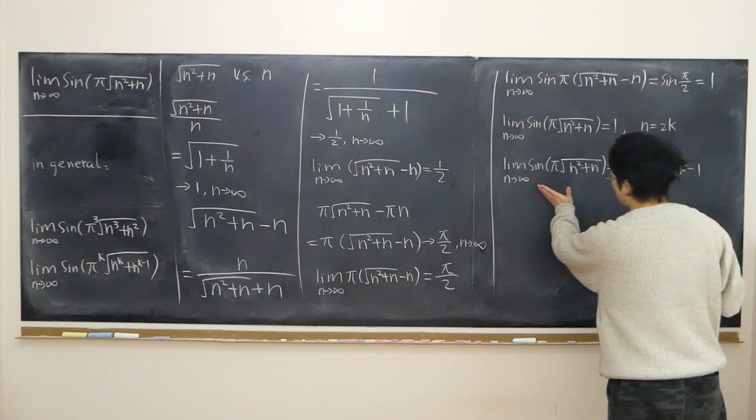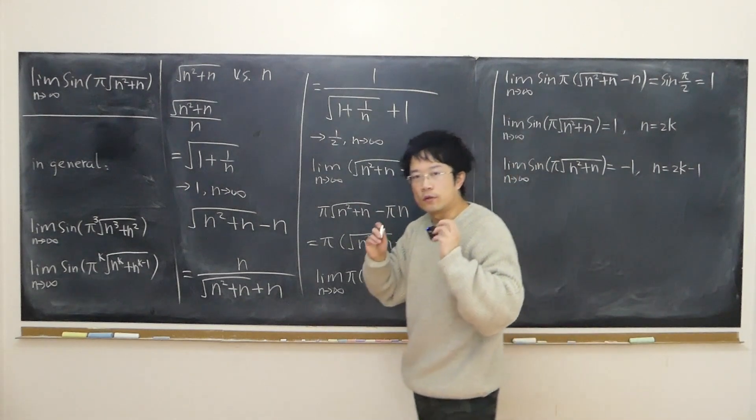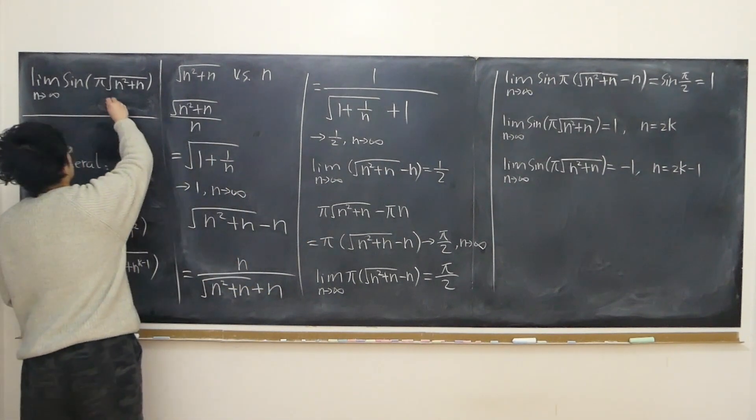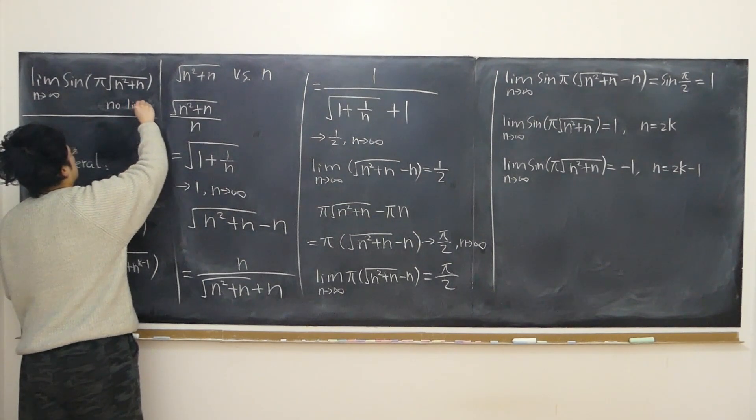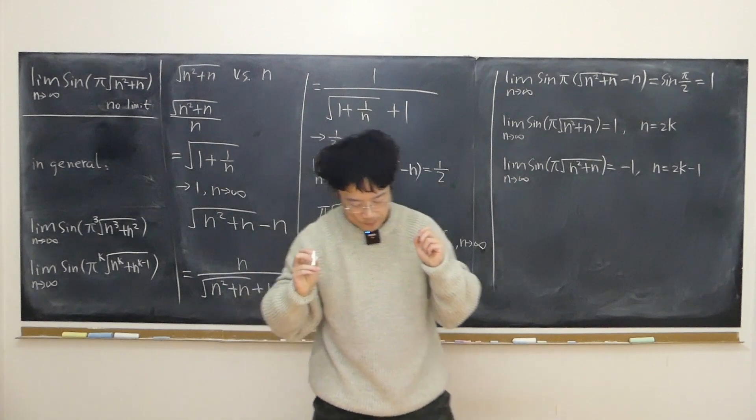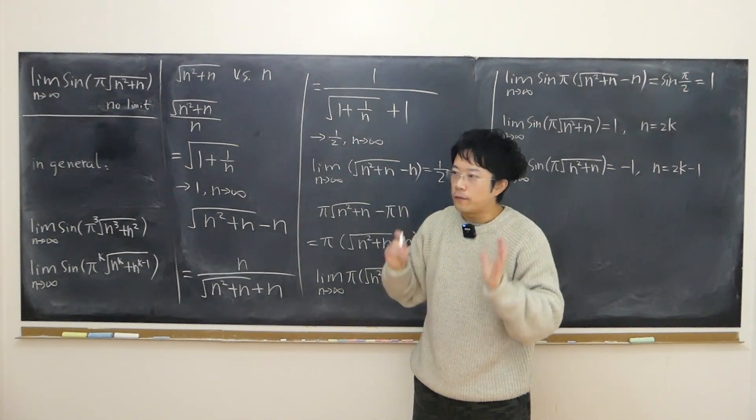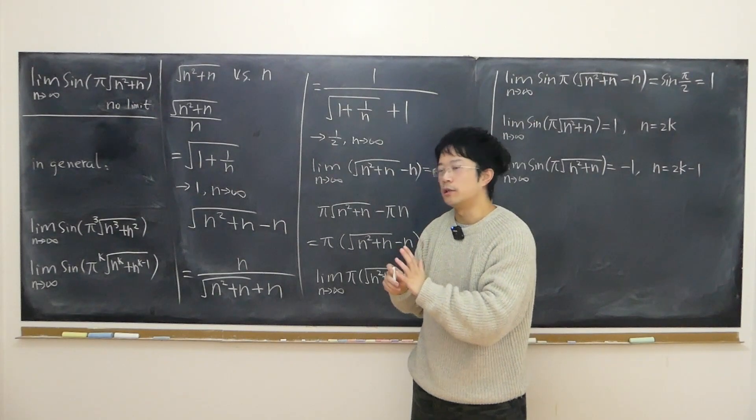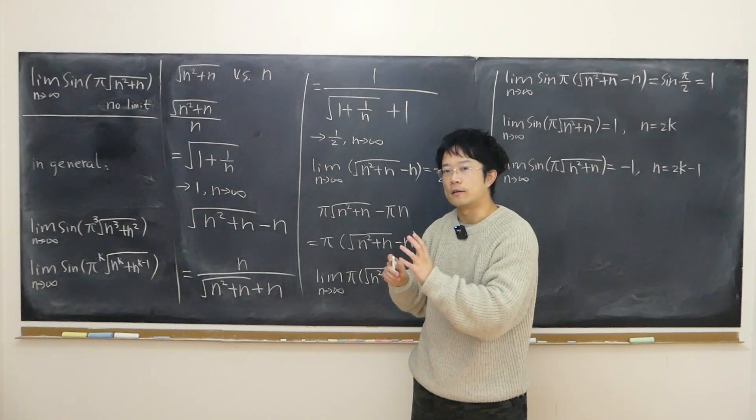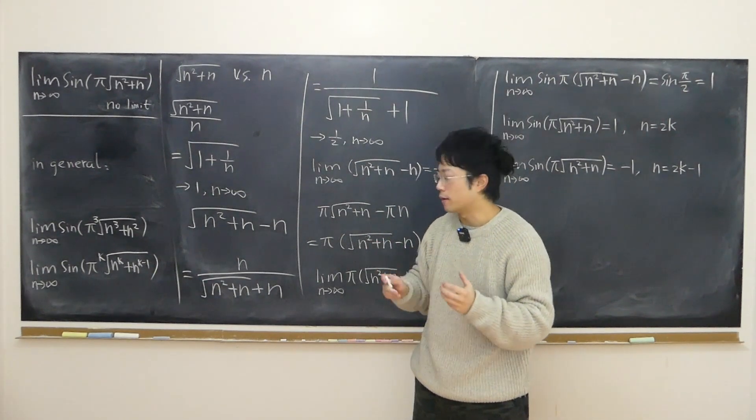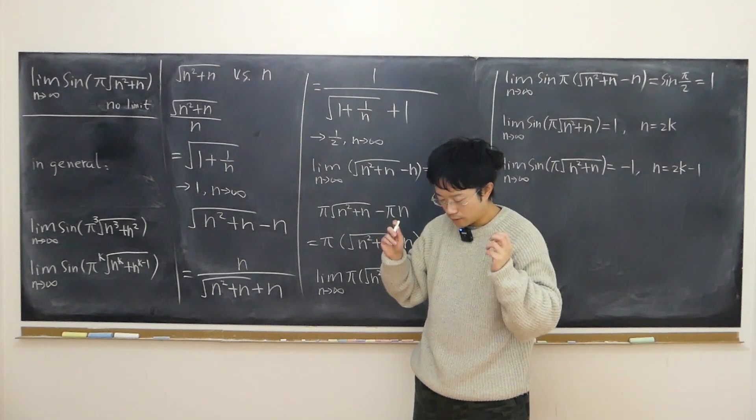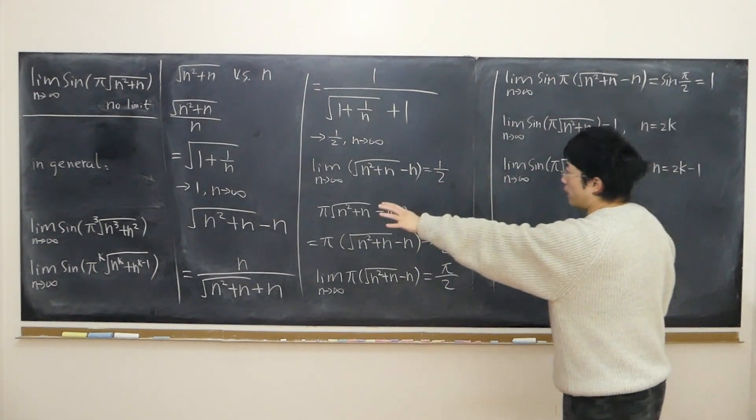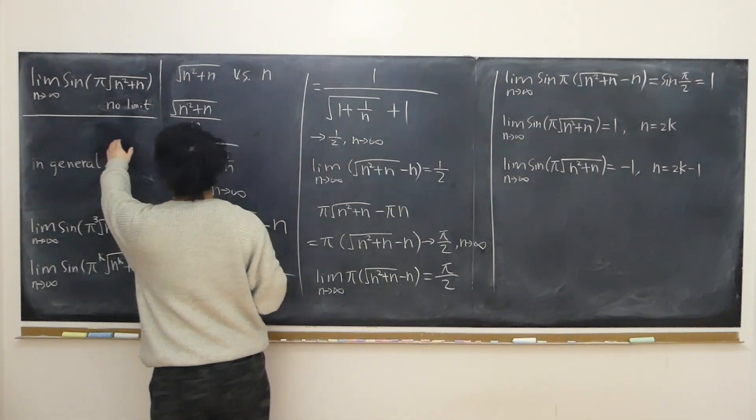In this case, clearly we have just found two subsequences that have different limits. Then we can easily draw the conclusion that there's no limit. Because in order for a sequence to have a limit, every single subsequence has to have exactly the same limit. It's a necessary condition, a minimum requirement. If the minimum requirement is not satisfied, there's no way for the original sequence to be convergent, so there's no limit.